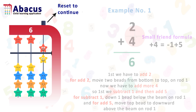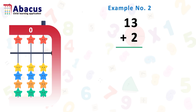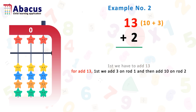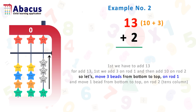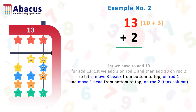Let's reset the abacus and go to the next example. Example number 2: 13 plus 2. First we have to add 13. For add 13, we add 3 on rod 1 and then add 10 on rod 2. Move 3 beads from the bottom to the top on rod 1, and move 1 bead from the bottom to the top on rod 2, which is the 10s column.